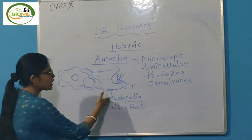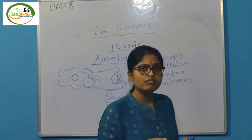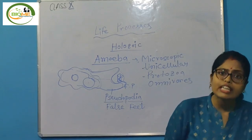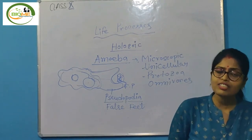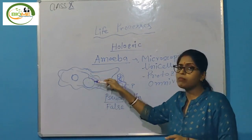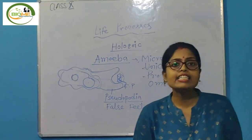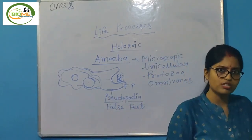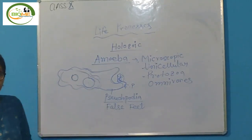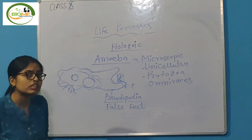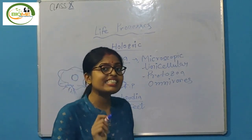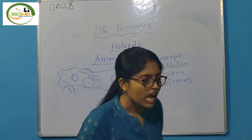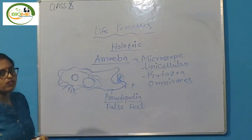To recap nutrition in amoeba: ingestion — intake of food with the help of pseudopodia; digestion — food combines with the vacuole to form the food vacuole where enzymes are released; absorption — simple substances circulate throughout the body for growth and development; assimilation — some simple form is stored for future use; and finally egestion — the undigested matter is eliminated from the amoeba's body. 'Egestion' means exit or out, completing the holozoic mode of nutrition.